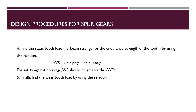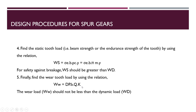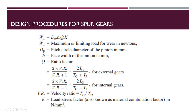Finally, we find the wear tooth load using the relation: Ww = Dp × b × Q × K, where Dp is the pitch circle diameter of the pinion, b is the face width, Q is the ratio factor equal to 2Tg/(Tg + Tp) for external gears and 2Tg/(Tg − Tp) for internal gears, and K is the load stress factor in Newton per mm². The velocity ratio is given by Tg/Tp.